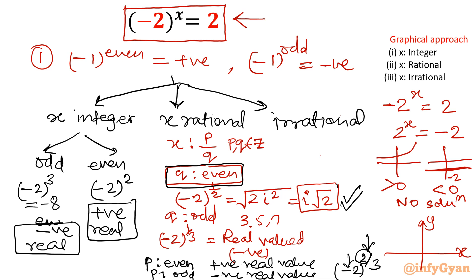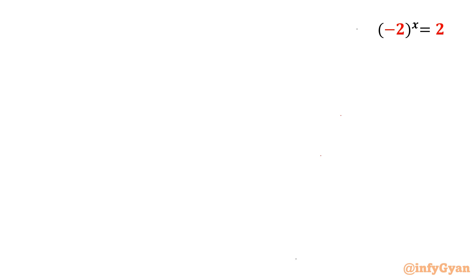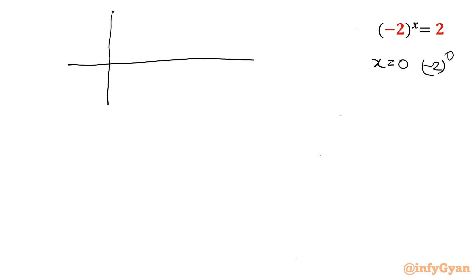Let me draw the graph. Put x equal to 0: (-2)^0 = 1. Our story begins here. Put x equal to 1: (-2)^1 = minus 2. So immediately, putting x=0 gives value 1, putting x=1 gives value minus 2. My value is oscillating — it was 1, now it is minus 2.